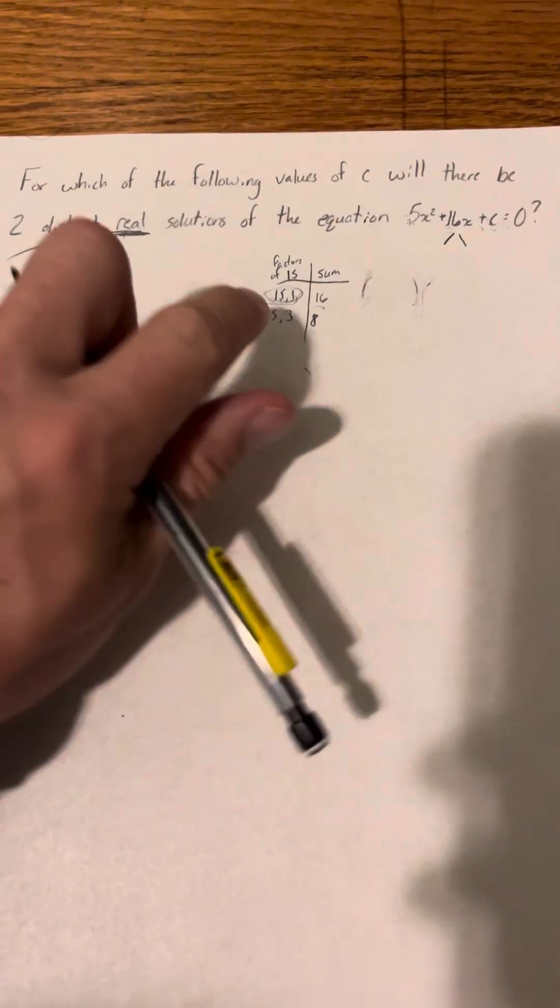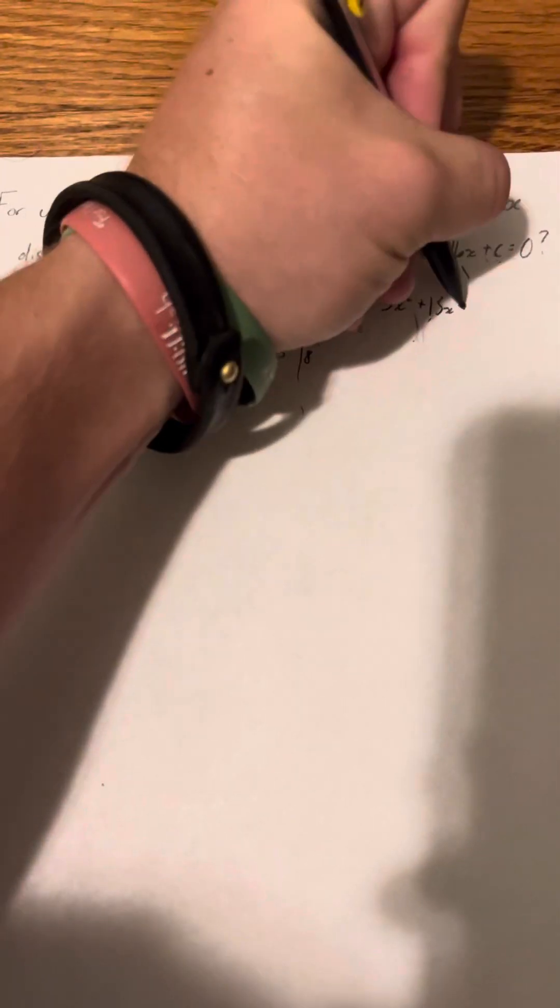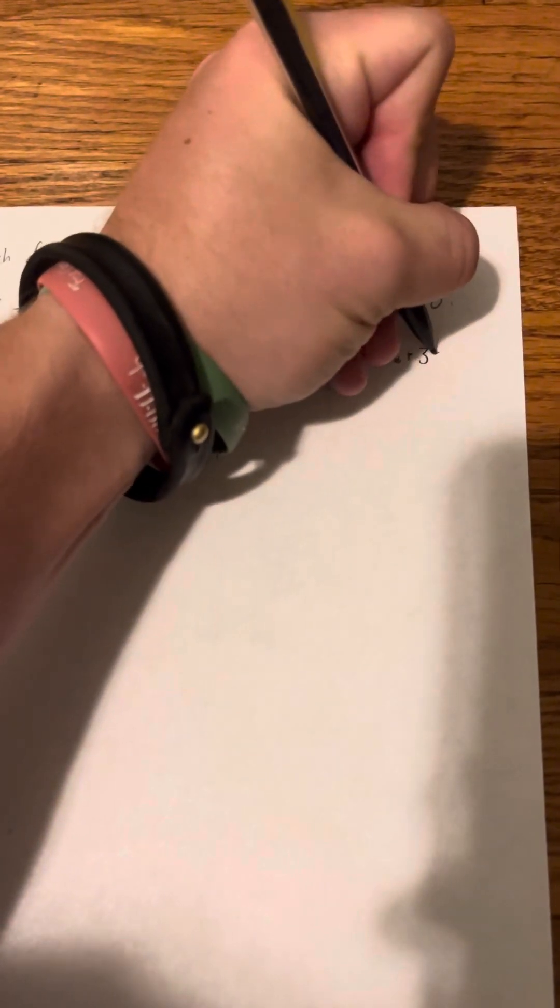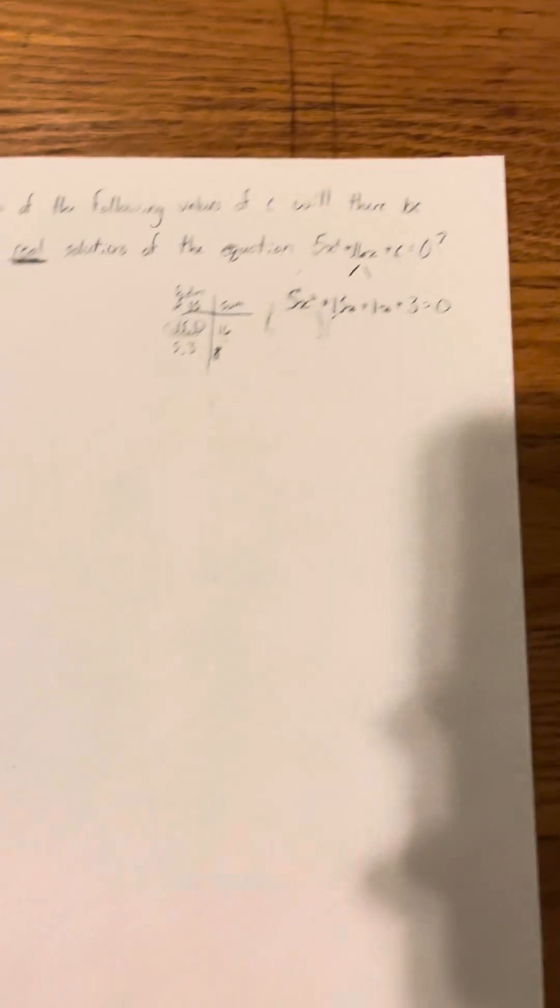Okay, I'm going to break up my middle term into these two new terms. So I'm going to bring down my 5x squared, and then I'm going to break this up into 15x and 1x. So plus 15x, plus 1x, and then plus, remember we plugged in 3 for C, so plus 3 equals 0.